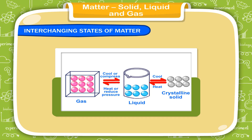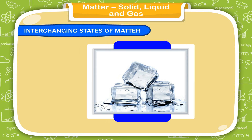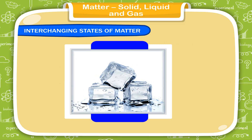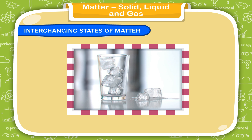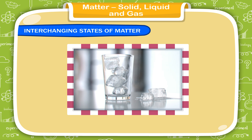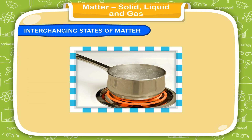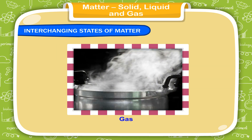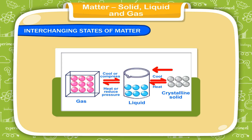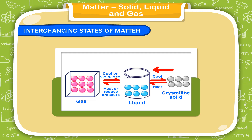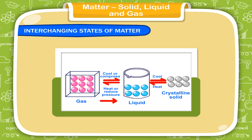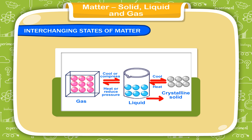Interchanging states of matter: Matter can change its state. Take out a few ice solid cubes from your fridge and put them in a pot. Leave the ice cubes for a few minutes. It converts into water, a liquid. Now boil this water. After a few minutes, the water converts into steam, a gas. Thus, a solid can be converted into a liquid and a liquid into a gas. Similarly, a gas can also be converted into a liquid and a liquid can be converted into a solid.